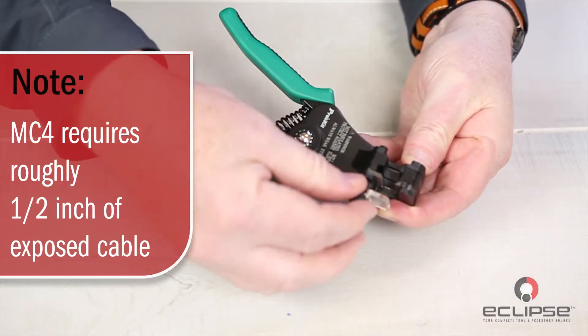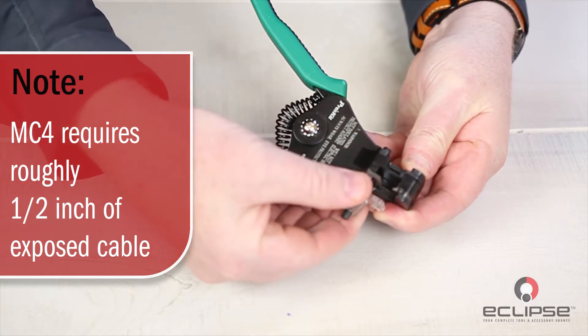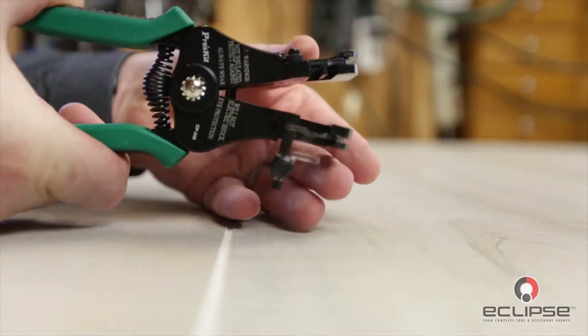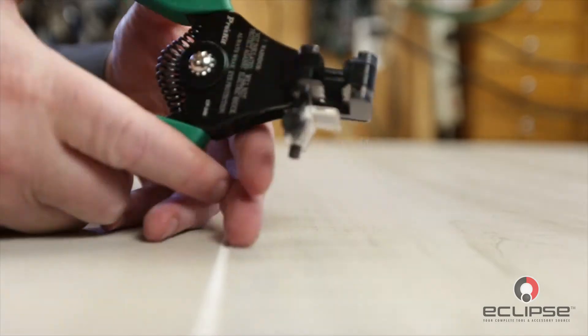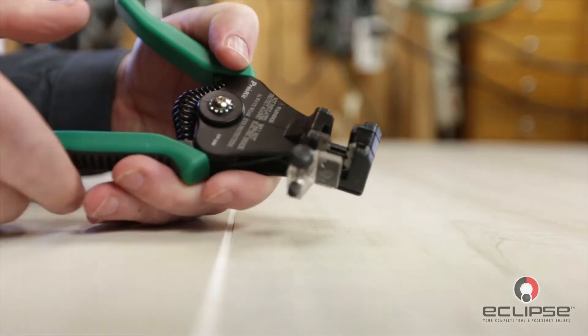Next, we're going to set up the stripper to strip the correct length from the end of your solar cable. As you can see, I have the stop guide positioned here ready to strip the solar cable for MC4.